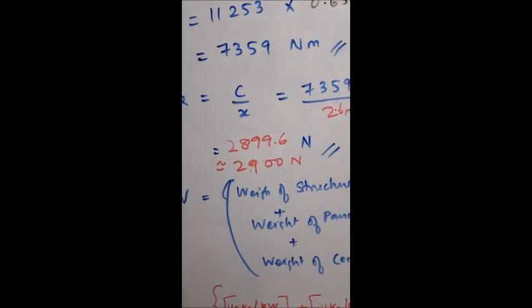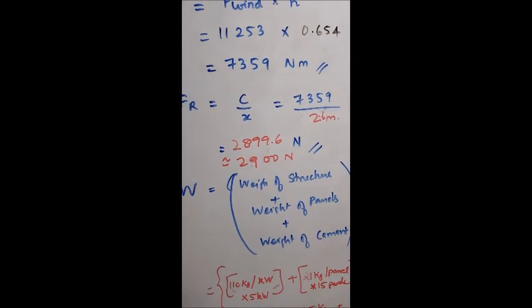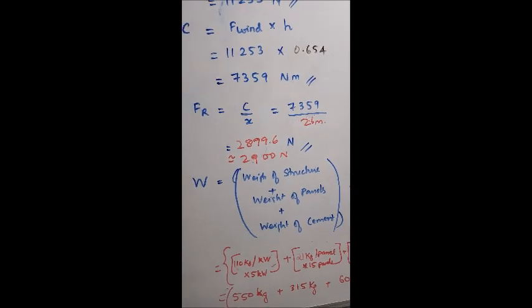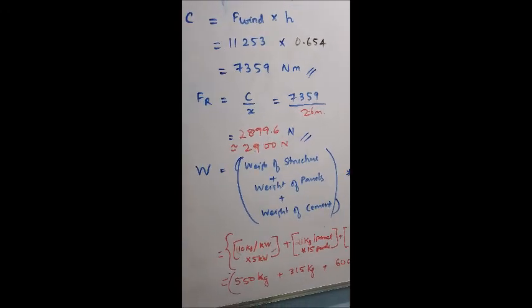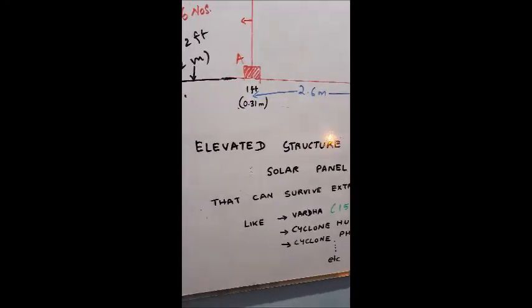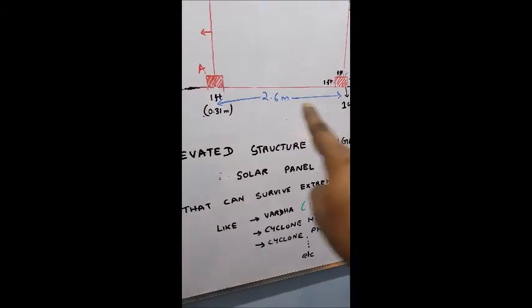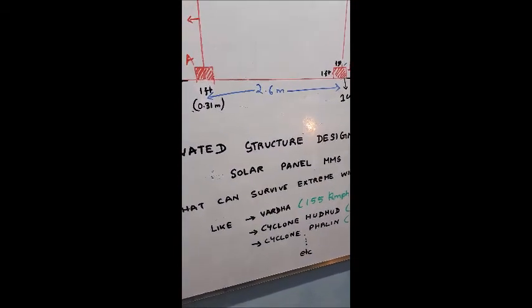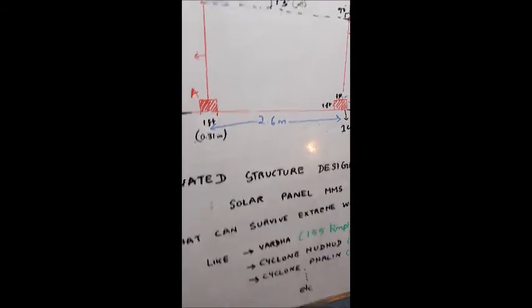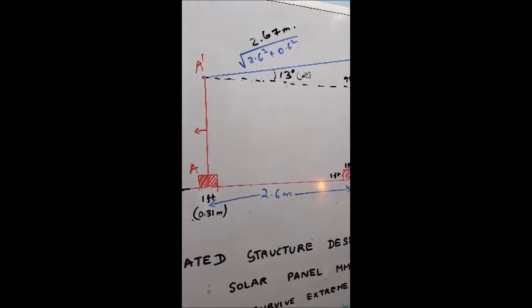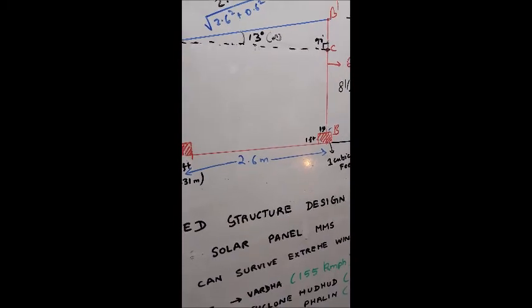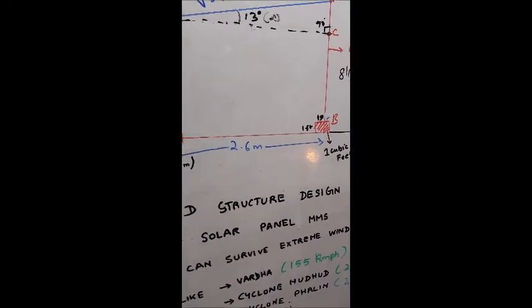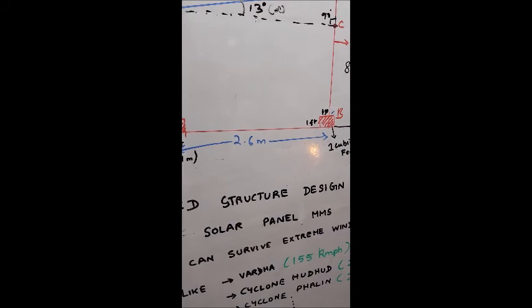The energy is 7359 Newton meters. When I divide this by X, what is X? X is basically the distance between the small leg and the large leg. We have around 2.6 meters of distance separating it. You can refer to this part. And we have also measured this on site. This was the distance we maintained between the structures.